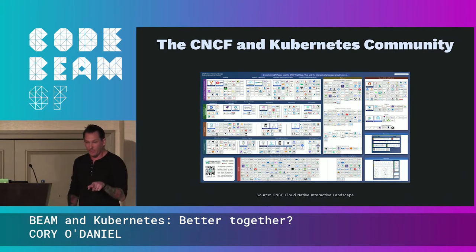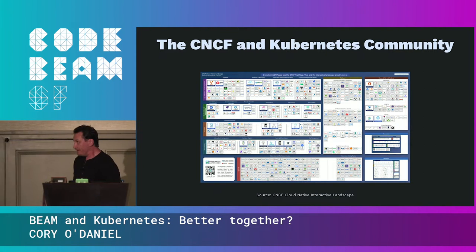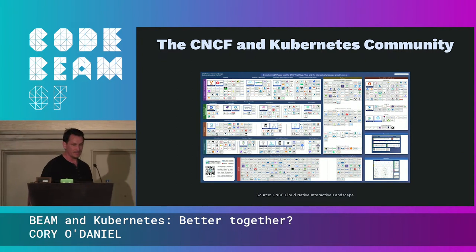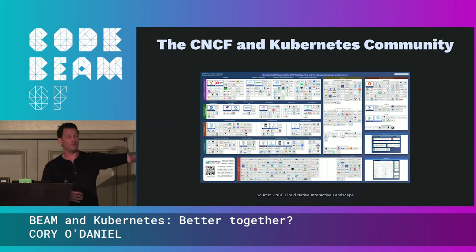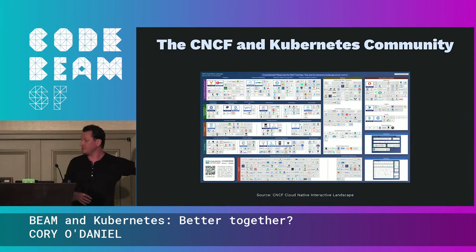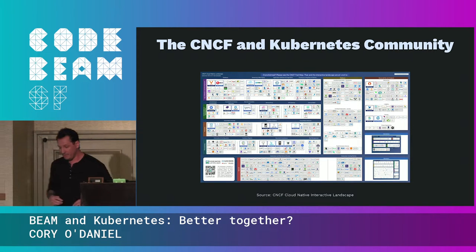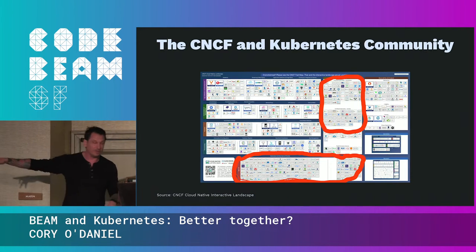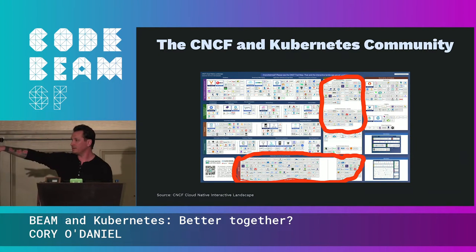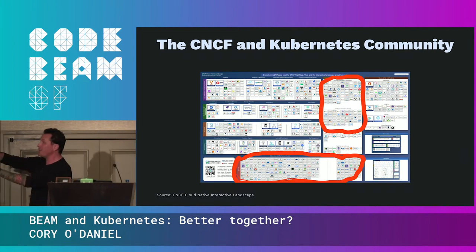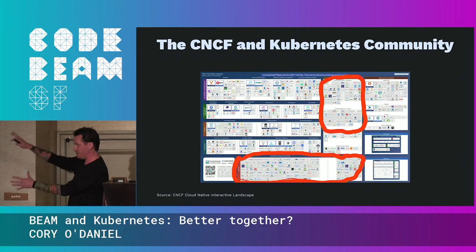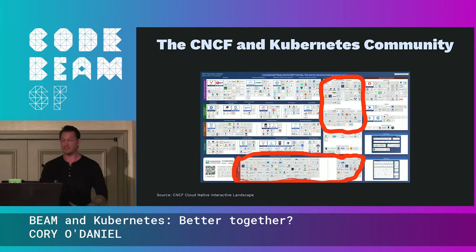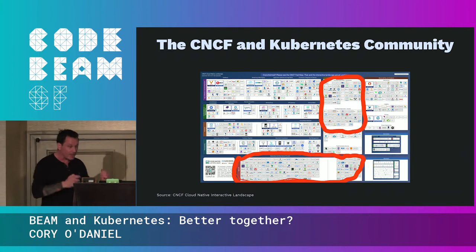The third thing is community. This is the CNCF landscape — I would definitely recommend Googling this — it's a super awesome visualization of a bunch of different applications and services in the Kubernetes and CNCF ecosystems. The red circles are companies and services dedicated to Kubernetes. About 20% of this visualization is huge companies investing resources into Kubernetes. You're in good company.